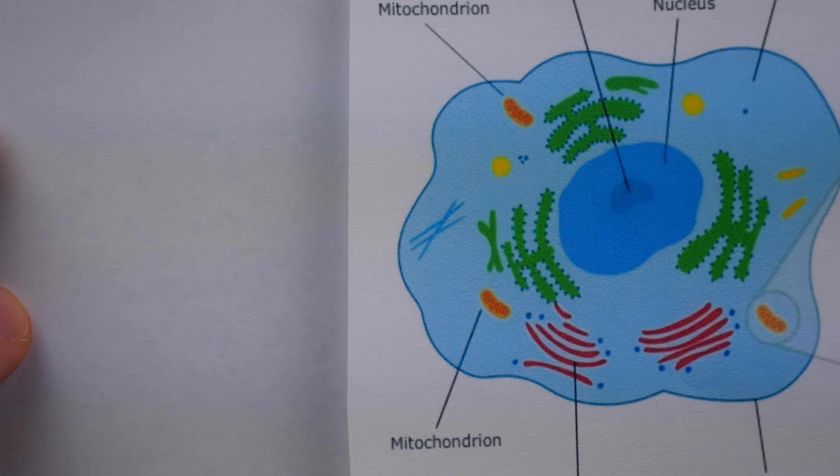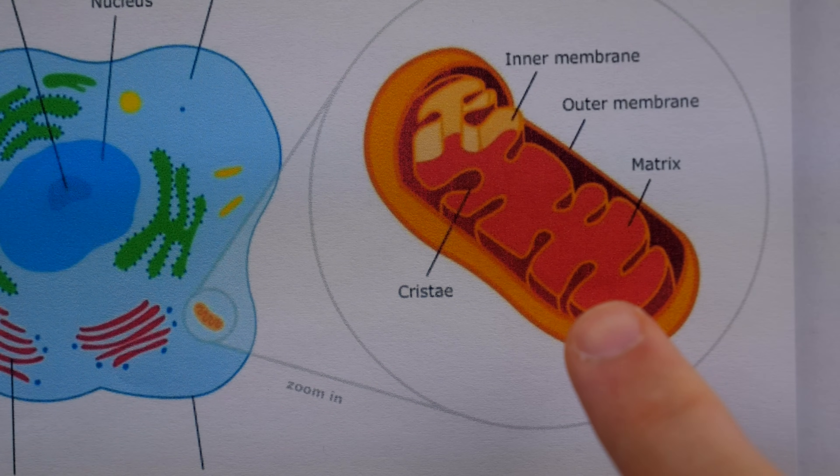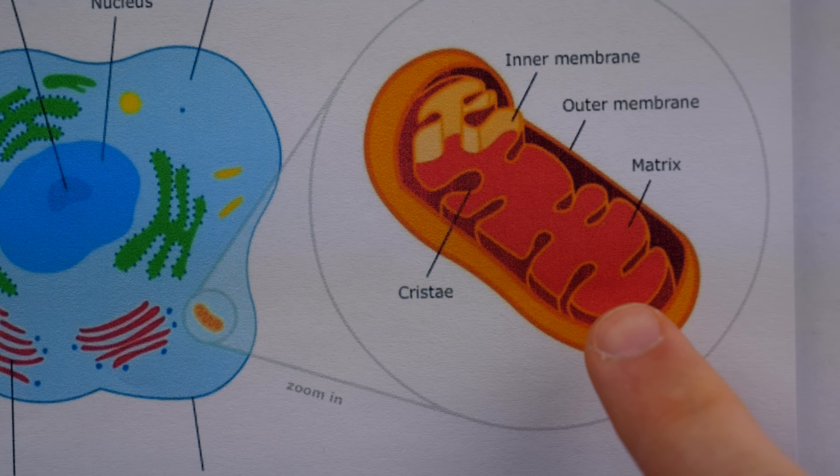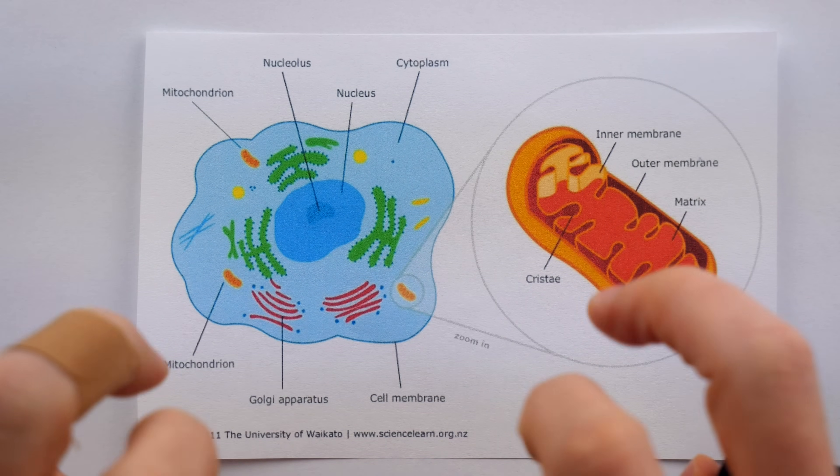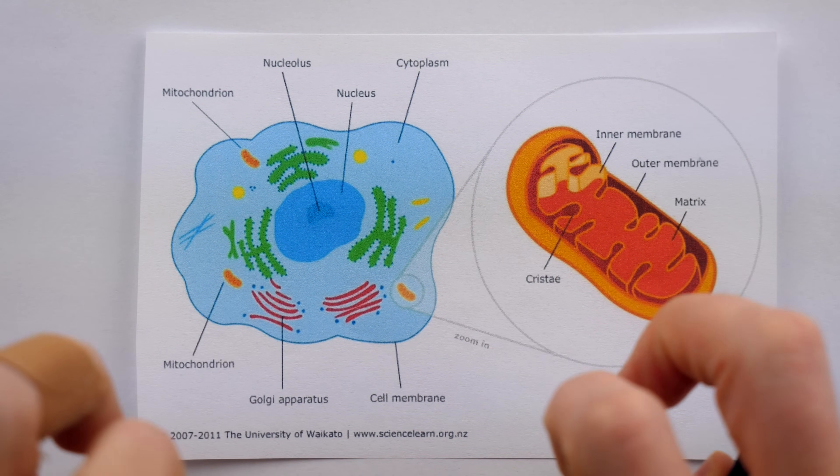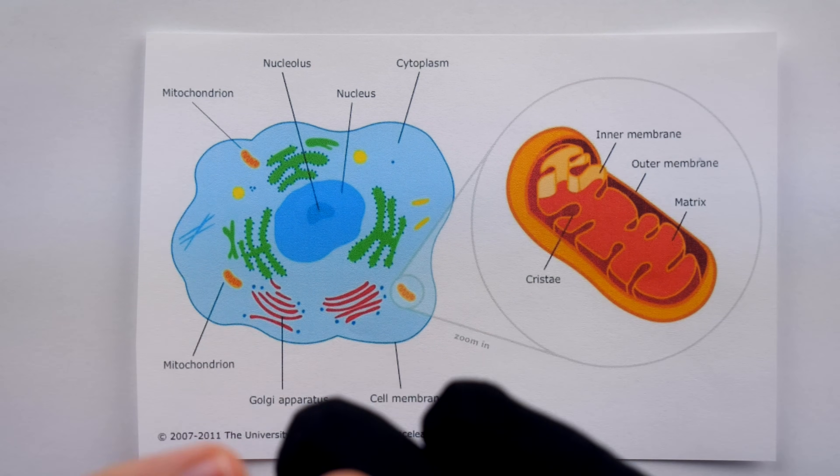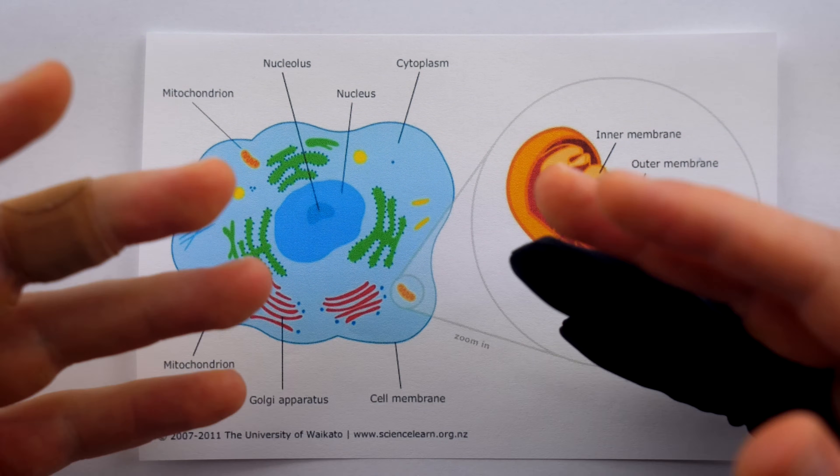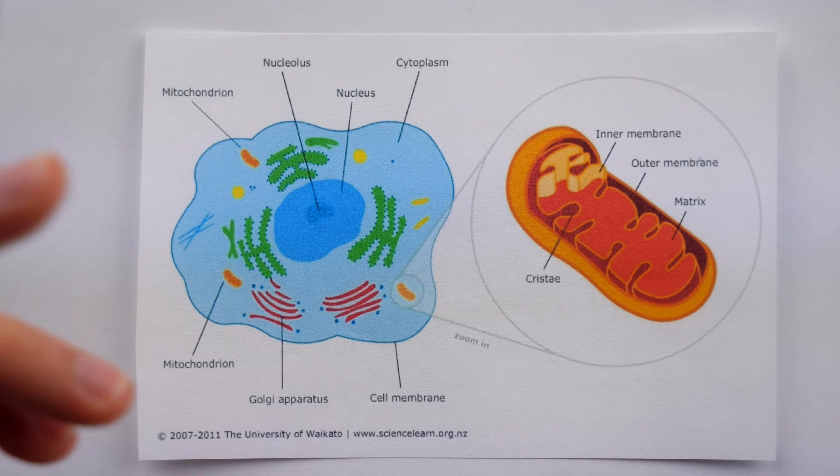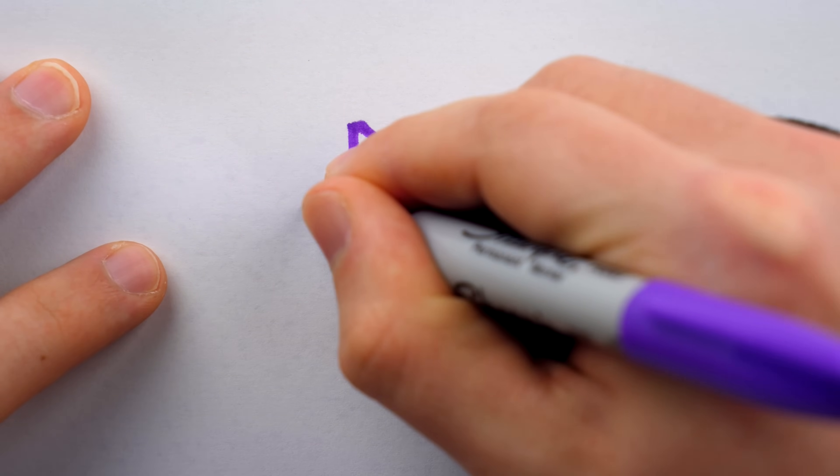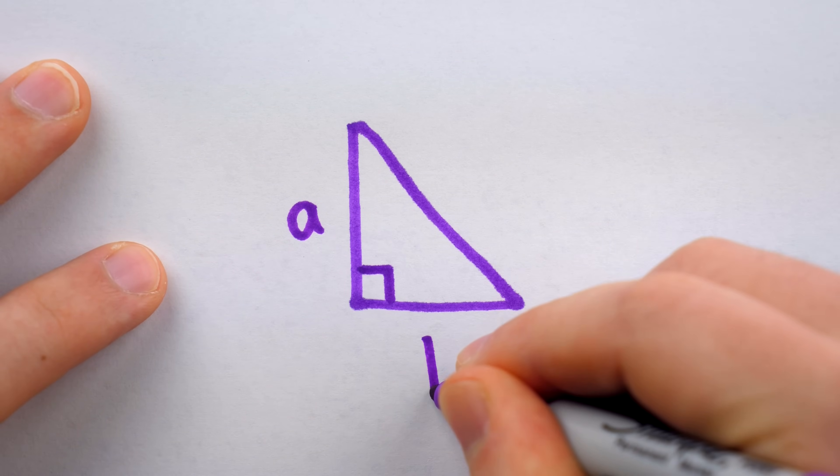This is a cell, and this is its powerhouse, the mitochondria. The mitochondria is the powerhouse of the cell is one of the most repeated refrains from American schools. There's only one fact I can think of that even comes close to matching the beloved mitochondria, and that is, of course, the famous Pythagorean theorem.